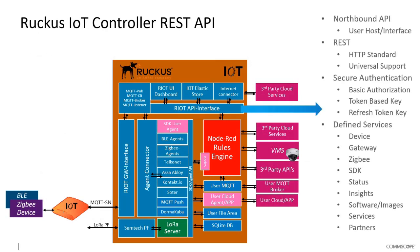As we look at the IoT controller and the REST API interface, the IoT controller handles a lot of functionality — interfacing to all IoT access points and ZigBee, BLE, and LoRa devices out on the edge. All of that information is brought back into the IoT controller through our MQTT interface and stored within our Elastic Store and database. The API provides direct access into all of those modules — storage, the database, the MQTT interface, the rules engine, and all agents running within the IoT controller.